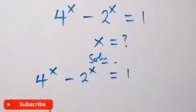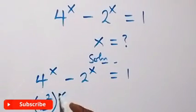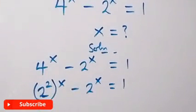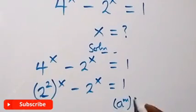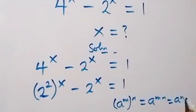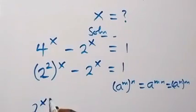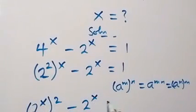Here, just write 4 as 2 squared, then raised to power x minus 2 raised to power x equals to 1. Then from here, applying the law of indices — when we have a raised to power m raised to power m, we can interchange the powers — and this becomes 2 raised to power x, then squared, minus 2 raised to power x equals to 1.